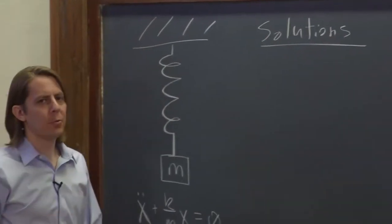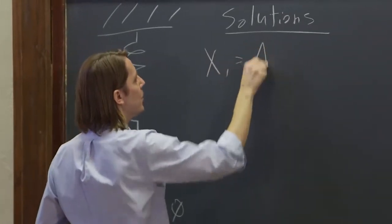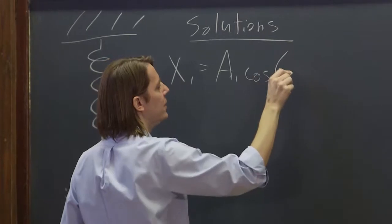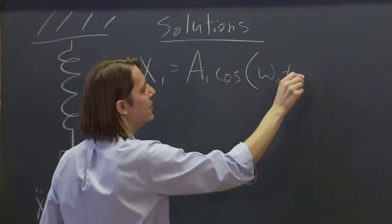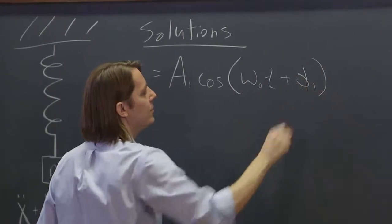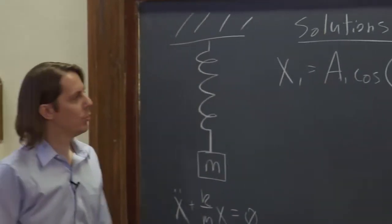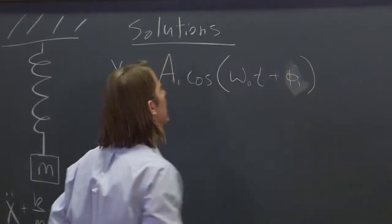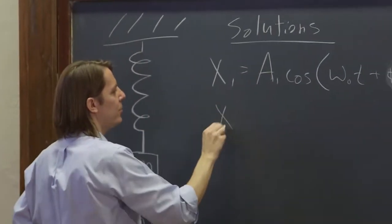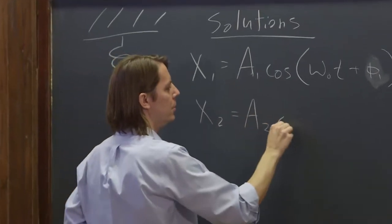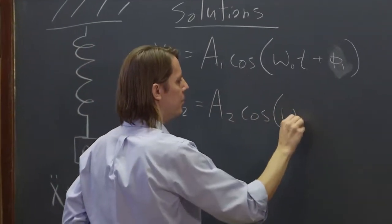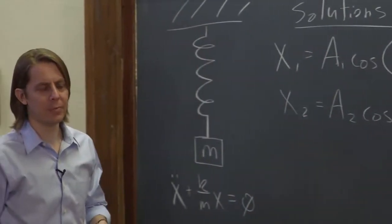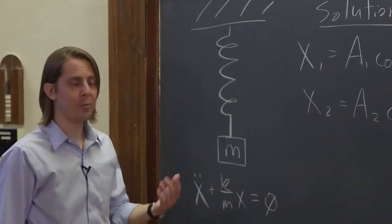But really, there's more than one solution. You could say x1 is some amplitude 1 cosine of omega 0 t plus some phase. We know that omega 0 is set by the system, but we know the amplitude and the phase are arbitrary. But you could also have some other solution with a different amplitude and a different phase. Maybe you pushed it harder. Maybe you change when you define time to be 0.